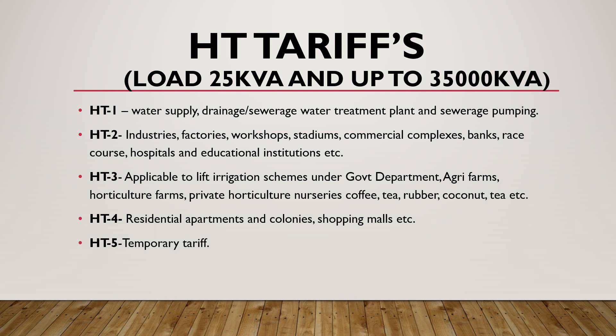HT-3 is applied for lift irrigation schemes under government departments, agri-farms, horticulture farms, private horticulture nurseries, and plantations such as coffee, tea, rubber, and coconut. HT-4 is used for residential apartments, colonies, and shopping malls. HT-5 is used for temporary installations such as construction of factories, apartments, shopping malls, and similar projects.